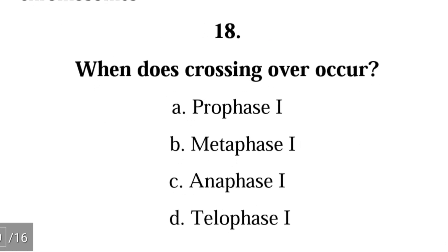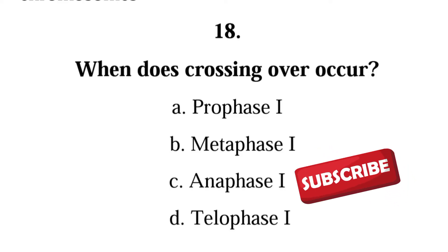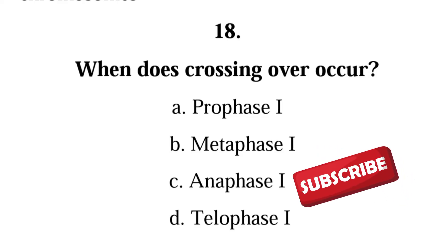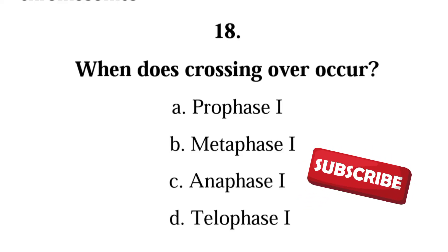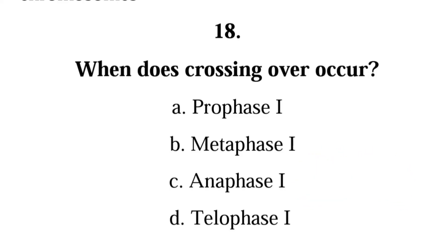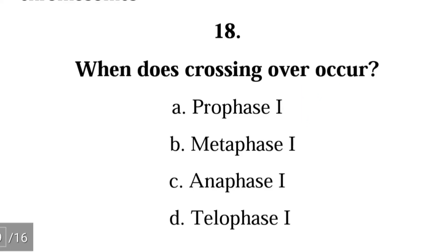Question 18: When does crossing over occur? A. prophase 1, B. metaphase 1, C. anaphase 1, D. telophase 1? The correct answer is A, prophase 1. Crossing over takes place during prophase 1.